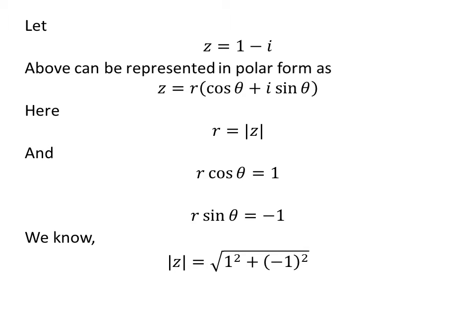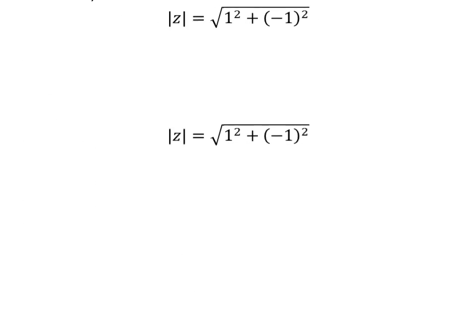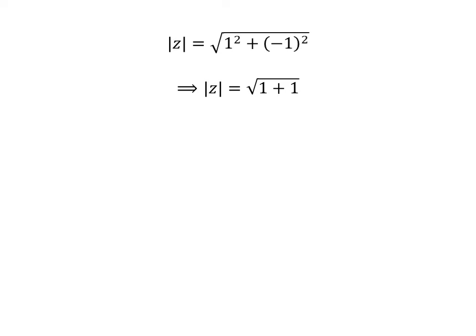As per the definition, modulus of z is equal to the square root of square of 1 plus square of minus 1. As square of 1 is 1 and square of minus 1 is 1, modulus of z equals square root of 1 plus 1. So modulus of z equals square root of 2, which is equal to r.